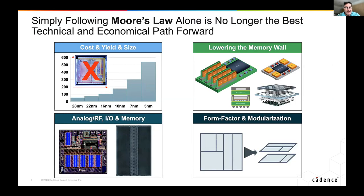This slide explains our view of what's happening in the industry as we see more people pivoting away from Moore's Law and into these more-than-Moore types of technologies. Many in the industry today believe that simply following Moore's Law with your next generation of design is just not the best competitive path forward — from an economical or a technical perspective — because of advancements in packaging and chiplets. The factors driving everyone toward heterogeneous integration are shown here.